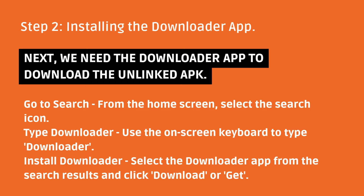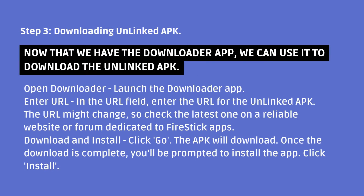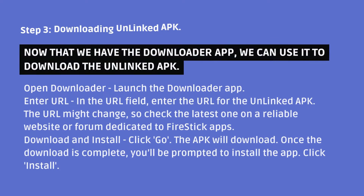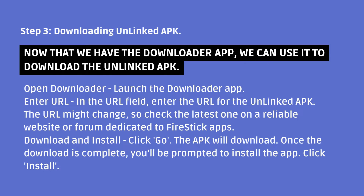Step 3: Downloading the Unlinked APK. Now that we have the Downloader app, we can use it to download the Unlinked APK. Open the Downloader app and launch it. In the URL field, enter the URL for the Unlinked APK. The URL might change, so check the latest one on a reliable website or forum dedicated to Fire Stick apps. Click Go — the APK will download. Once complete, you'll be prompted to install the app. Click Install.